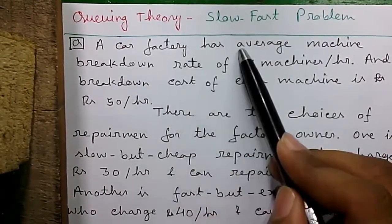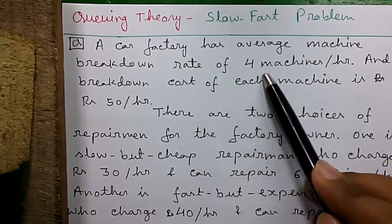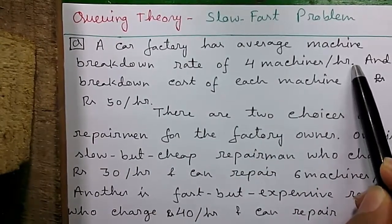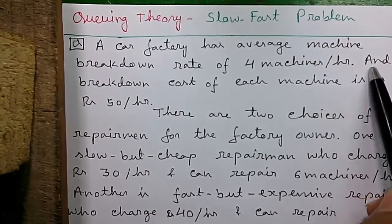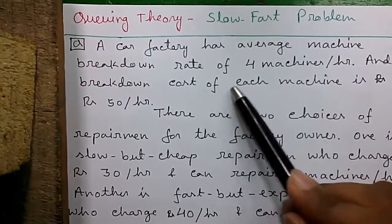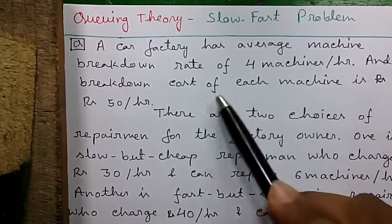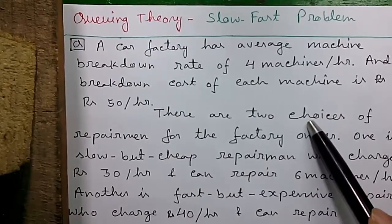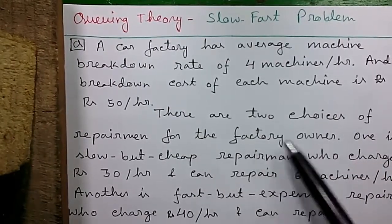So our question is a car factory has average machine breakdown rate of 4 machines per hour. That means 4 machines get faulty per hour on average. And the breakdown cost of each machine is Rs 50 per hour. There are two choices of repairmen for the factory owner.